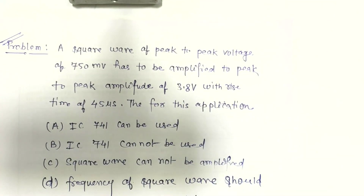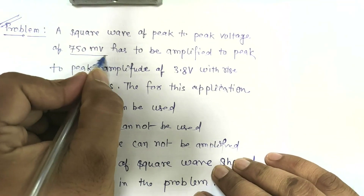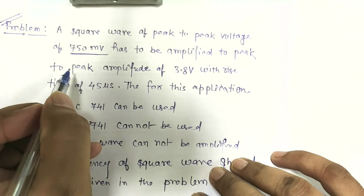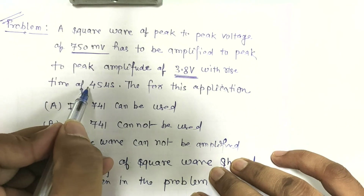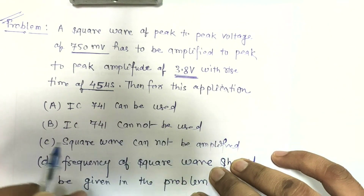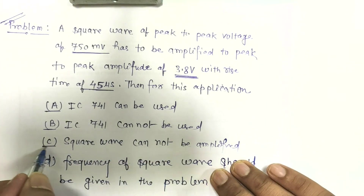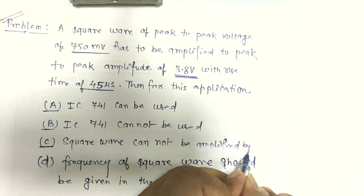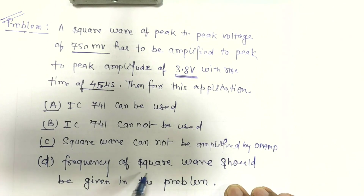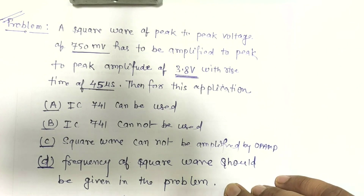Let us take one more problem. A square wave of peak-to-peak voltage of 750 millivolt has to be amplified to a peak-to-peak amplitude of 3.8 volt with rise time of 45 microseconds. The options are: (1) IC741 can be used, (2) IC741 cannot be used, (3) square wave cannot be amplified by op-amp, (4) frequency of square wave should be given. One option is correct. If you want to think by yourself, pause the video first.